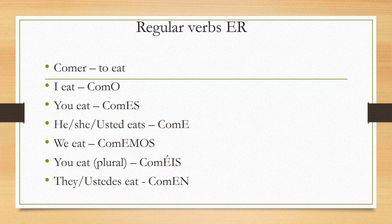For 'we,' the ending is EMOS — so 'we eat' is 'comemos.' For 'you plural,' the ending is ÉIS — so 'you all eat' is 'coméis.' And for 'they' or 'ustedes,' the ending is EN — so 'they eat' is 'comen.'